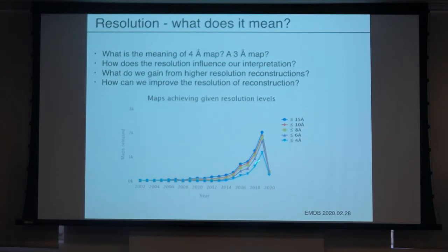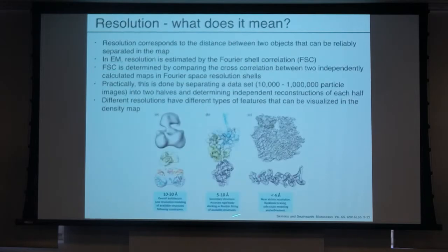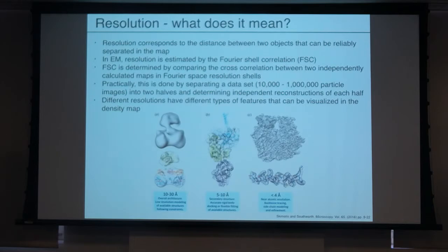Now, as processing has gotten better, cameras and microscopes have gotten better, our ability to make samples has improved — we can still get more, but it's still only about half the proteins actually achieve resolution better than 4 angstroms. So this idea that you're always going to be able to see side chains is a great goal but not necessarily realistic. As you're thinking about the question you're trying to use cryo-EM for, think about what information you might obtain at 10–30 angstroms, at 5–10 angstroms, and then if everything goes well and you get a sub-4 angstrom structure, what additional information does that provide?